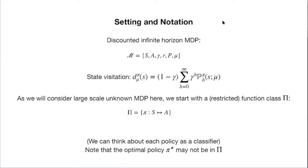We are not going to assume that the optimal policy pi-star belongs to our policy class pi. For large-scale MDPs like Go, nobody knows what the globally optimal pi-star looks like. AlphaGo showed us that what we previously understood as optimal was really just a local minimum. No one can ensure that a 10-layer deep neural network captures pi-star. We just start from some policy class and try to find the right balance between computation and policy class capacity — this is hyperparameter tuning.